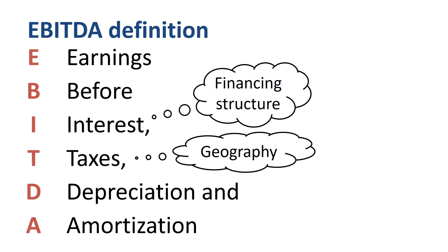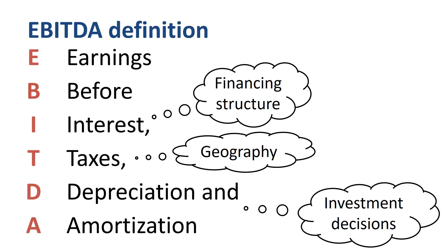Depreciation and amortization are excluded, because they depend on the historical investment decisions that the company has made, not the current operating performance. So EBITDA stands for earnings before interest, taxes, depreciation, and amortization.